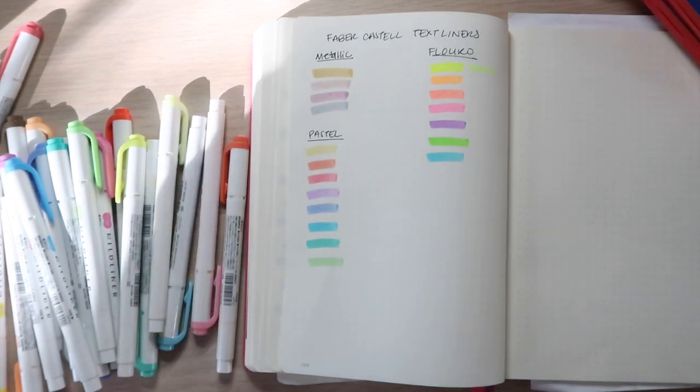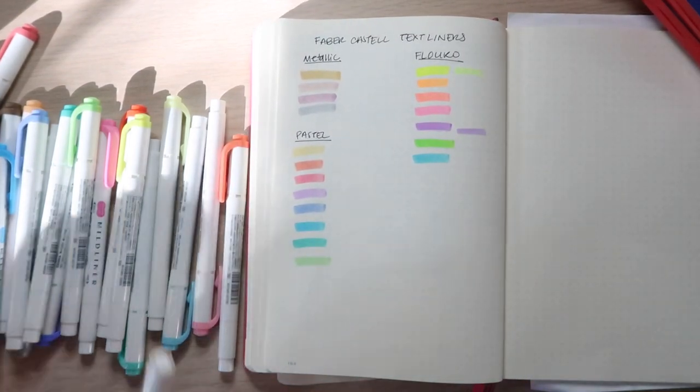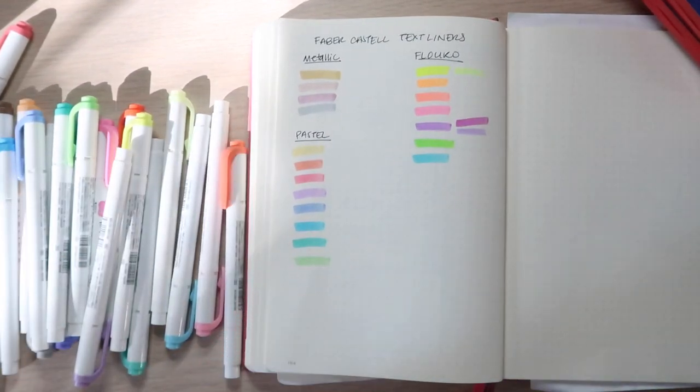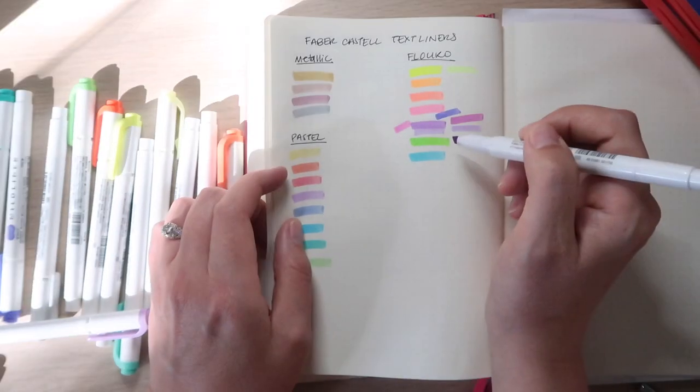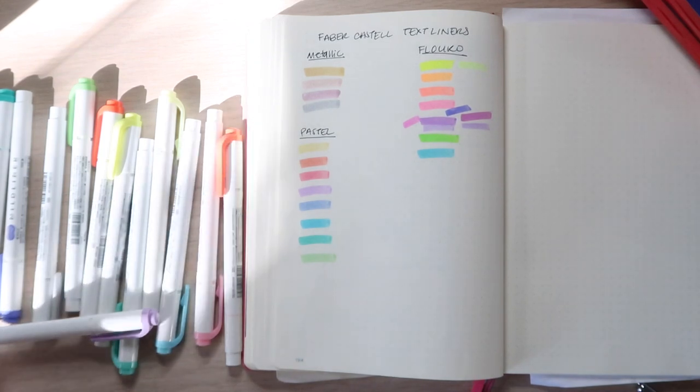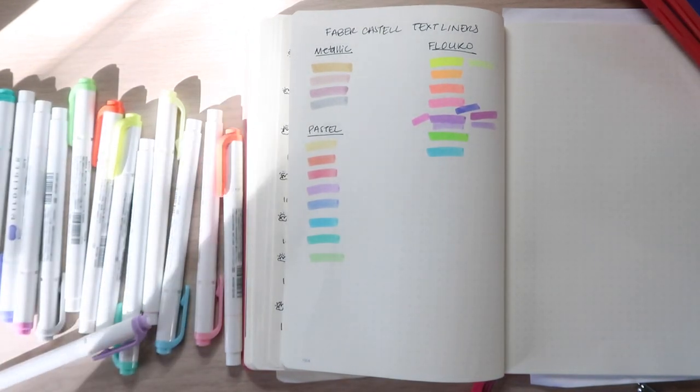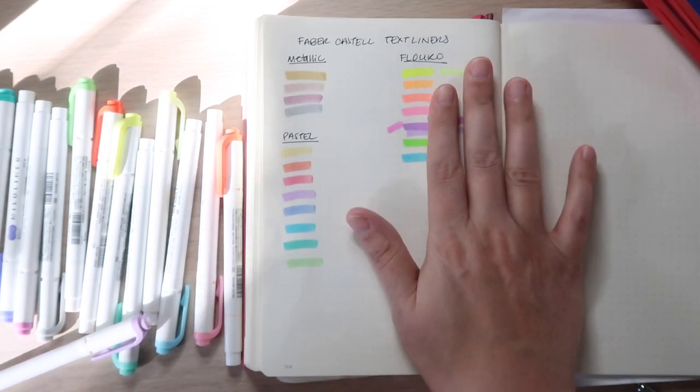There is one color though that is very similar. Is it this purple? No, not that purple. It's this one. No, not that one either. Which one was it? Magenta is the closest to the purple. But honestly, the super fluorescent ones, because they're so saturated, there really isn't super comparable colors for this one.